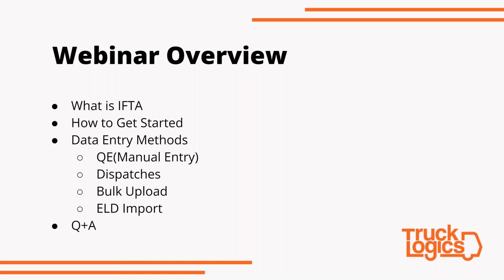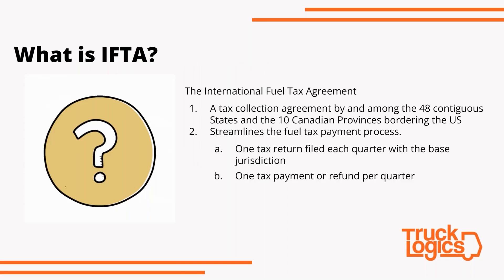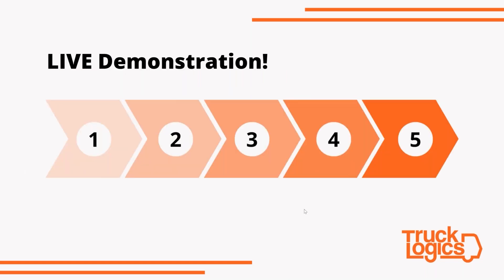So what is IFTA? IFTA is the International Fuel Tax Agreement. It is a tax collection agreement among the 48 contiguous states and the 10 Canadian provinces bordering the United States. It streamlines the fuel tax payment process. Previously, each individual state required you to file with them. Now you just file with your base jurisdiction — one tax return per quarter and one tax payment or refund per quarter.